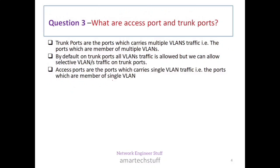Question number three: what are access ports and trunk ports? Trunk ports are ports which carry traffic of multiple VLANs — they are members of multiple VLANs. Access ports are ports which carry traffic of only a single VLAN — that port will be a member of only one VLAN.